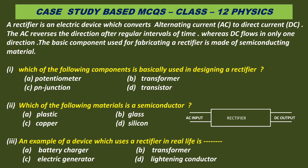The first case study is based on rectifier. A rectifier is an electric device which converts alternating current AC to direct current DC. The AC reverses the direction after regular intervals of time whereas DC flows only in one direction. The basic component used for fabricating a rectifier is made of semi-conducting material.